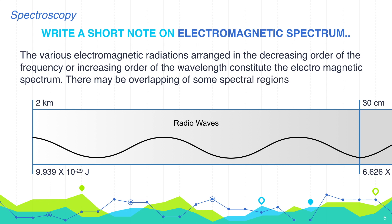So the first comes radio waves. Radio waves have very large wavelength of around 2 kilometer to 30 centimeter and with very low energy of around 10 to the power minus 28 joules. These low energy radiations are used in satellite transmissions, TV, radio and mobile phone communications.